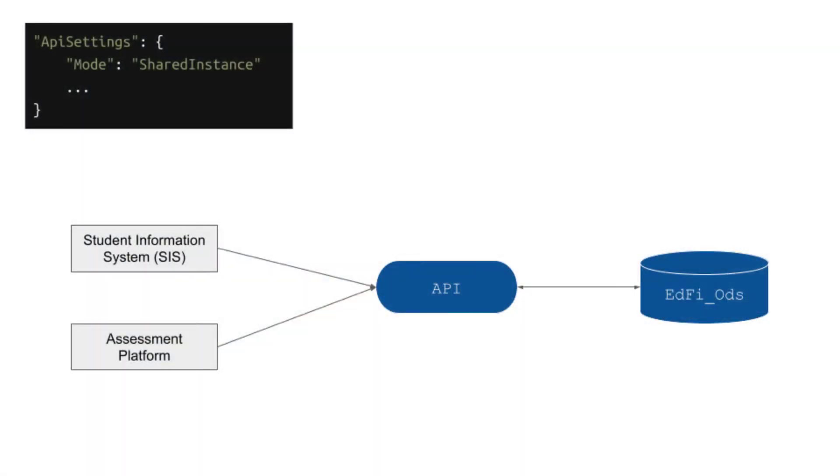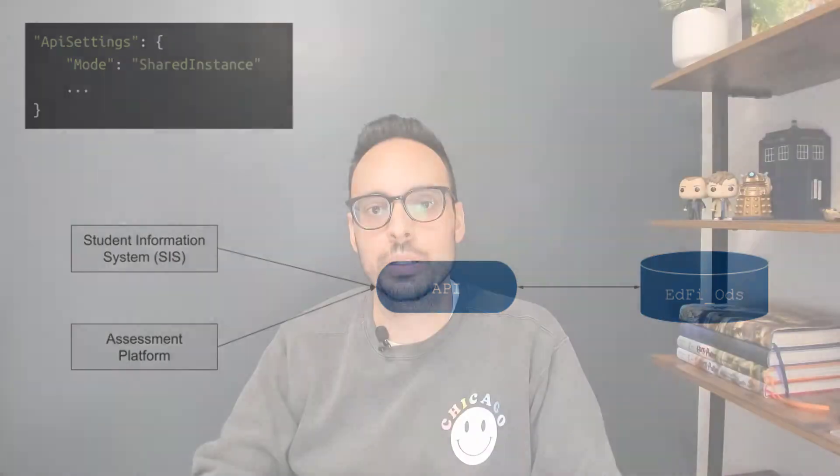Let's start with Shared Instance. This API mode is used when you want to create a direct 1-to-1 connection between the API and the ODS. This is the most straightforward of all API modes.